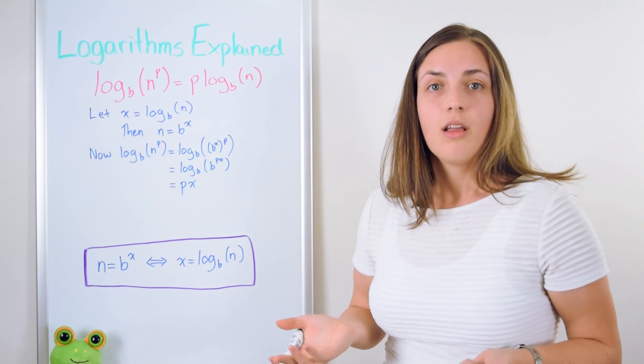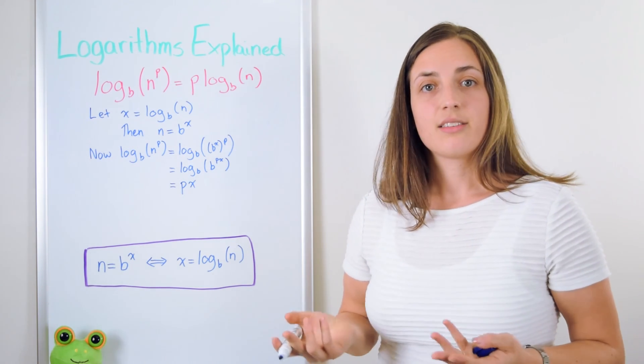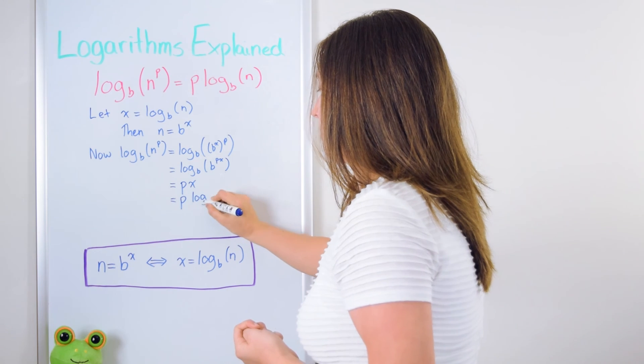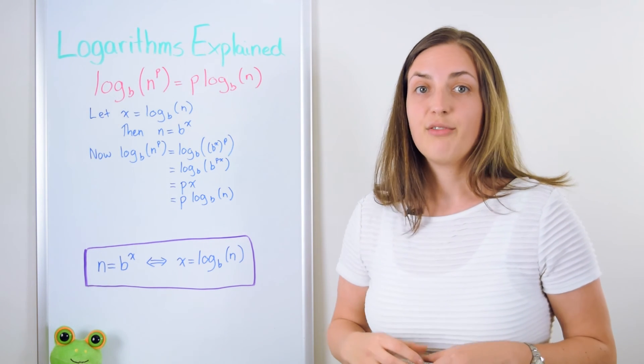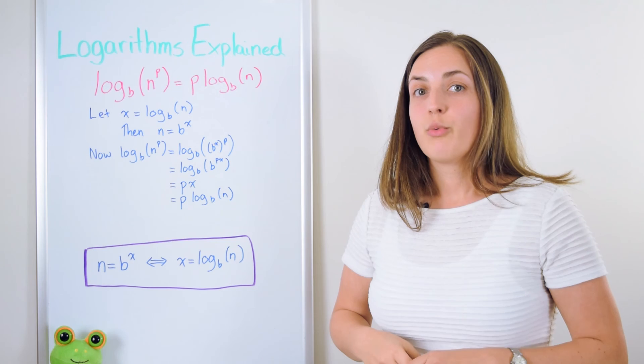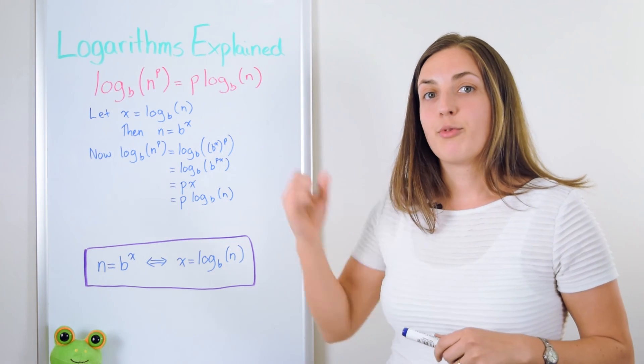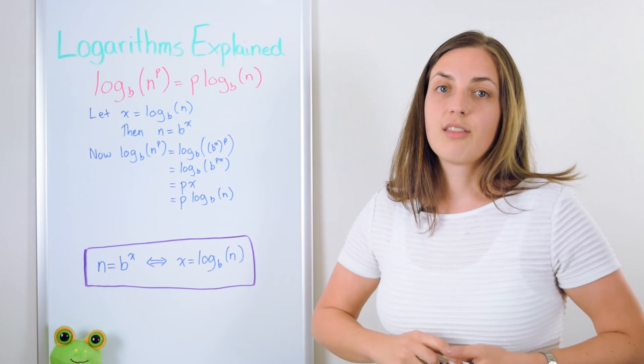And basically you're done. All you have to do is remember what is x. We started by letting x equal log base b of n. So now we're finished. We've been able to show that you're able to bring down the power to the outside of the logarithm.